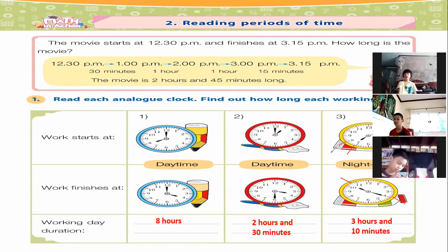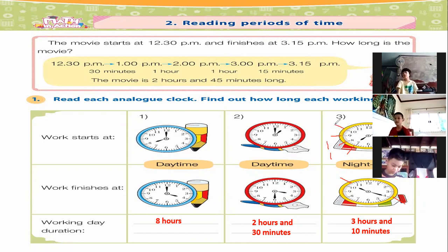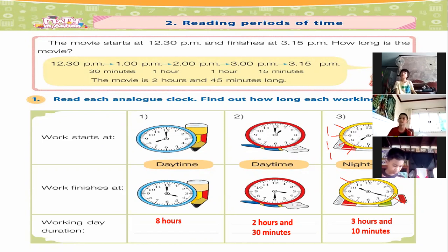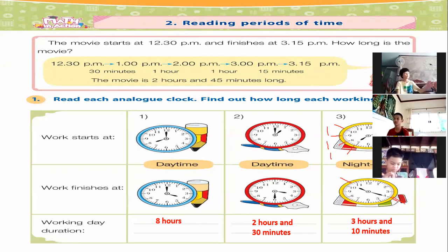From seven ten until eight ten we have one hour, then from eight ten until nine ten another one hour, then from nine ten until ten ten another one hour. The finishing time was ten twenty, so from ten ten until ten twenty we have 10 more minutes. Total: three hours and 10 minutes.